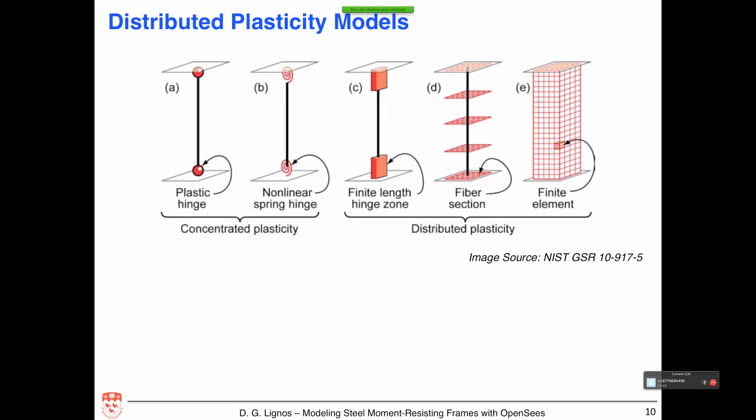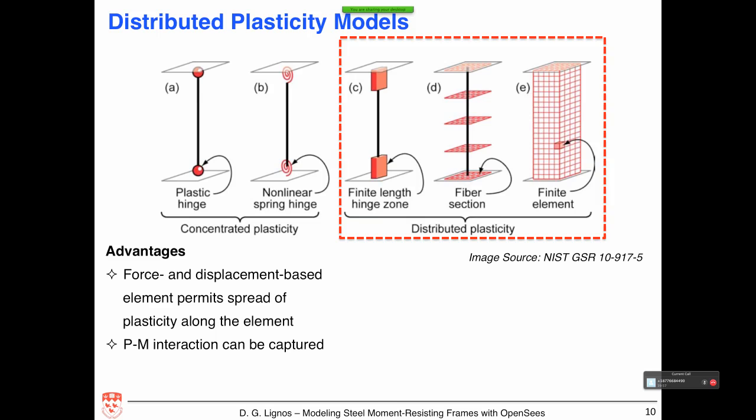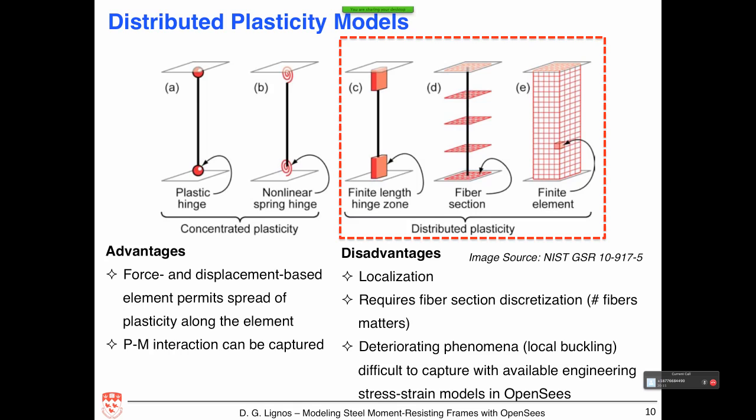For distributed plasticity models — the second category — you can use force- or displacement-based elements, which permit the spread of plasticity, and P-M interaction is not a problem. Disadvantages include localization issues, requiring fiber section discretization where the number of fibers matters for output accuracy. There are also issues related to degradation phenomena such as local buckling; with existing material models in OpenSees, it's not very easy to capture this effect.